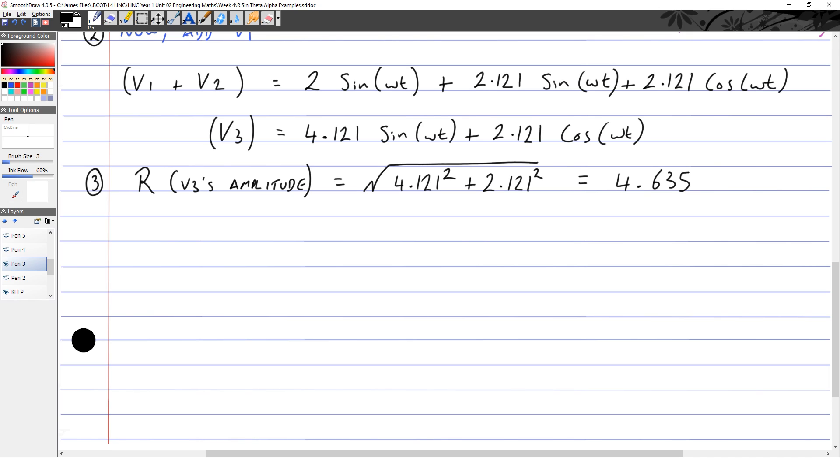Scroll down a bit. To find alpha, which is V3's phase shift, what we do is tan⁻¹ of the cosine coefficient of V3 divided by the sine coefficient of V3.